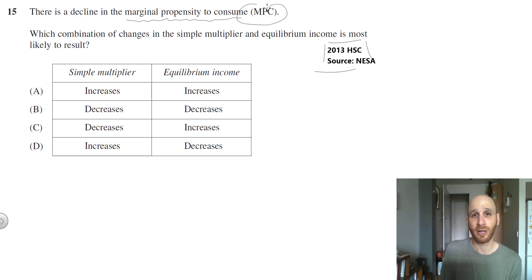The question says there is a decline in the marginal propensity to consume. So there is a decline in MPC. Which combinations of changes in the simple multiplier and equilibrium income is most likely to result?